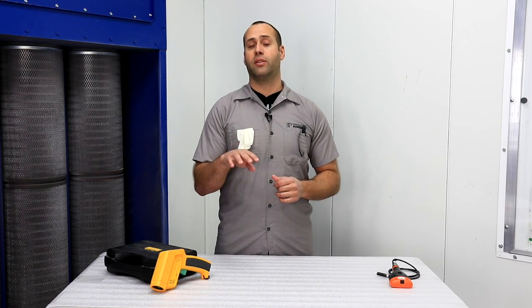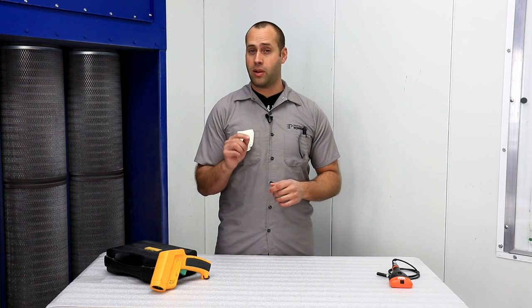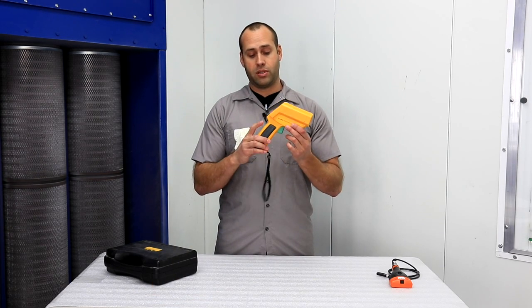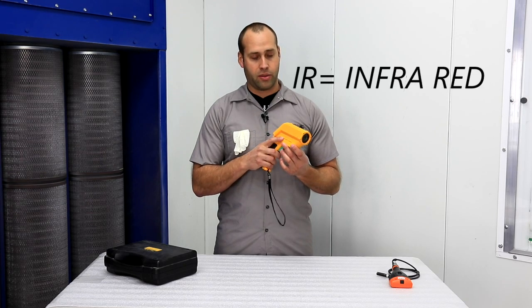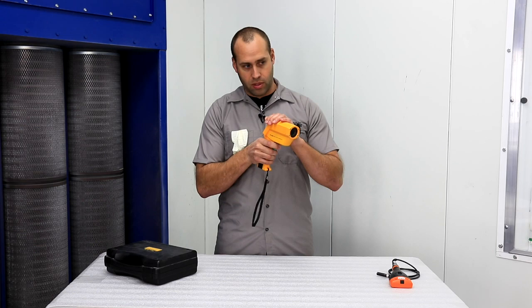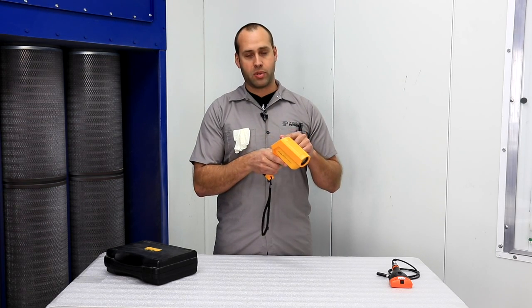Now that is based off of part temperature. So that's very important to know because to know what your part temperature is, you're going to need one of these. This is an IR thermometer temp gun. Simply crack the oven open, shoot the part, see what the temperature is.